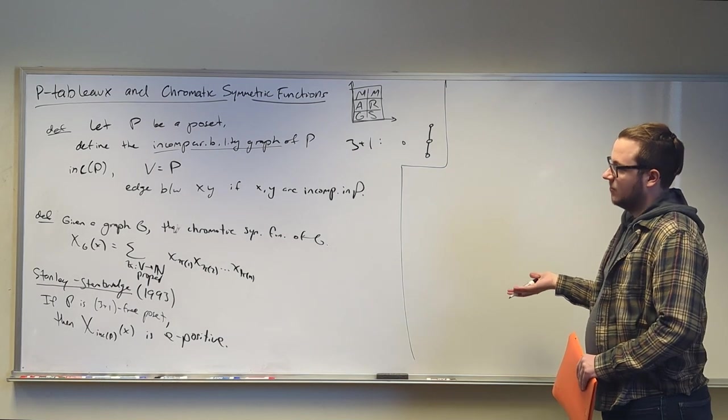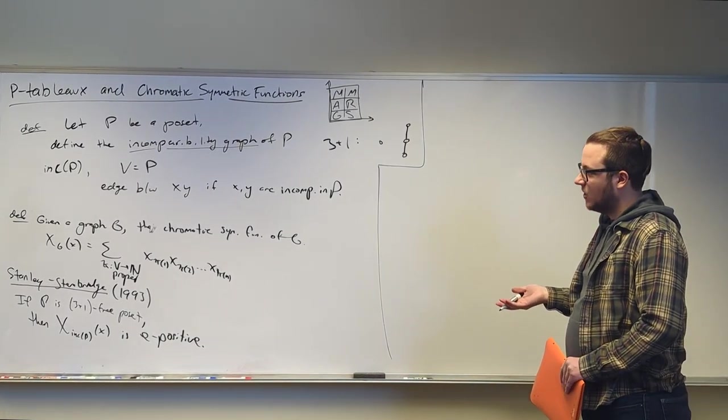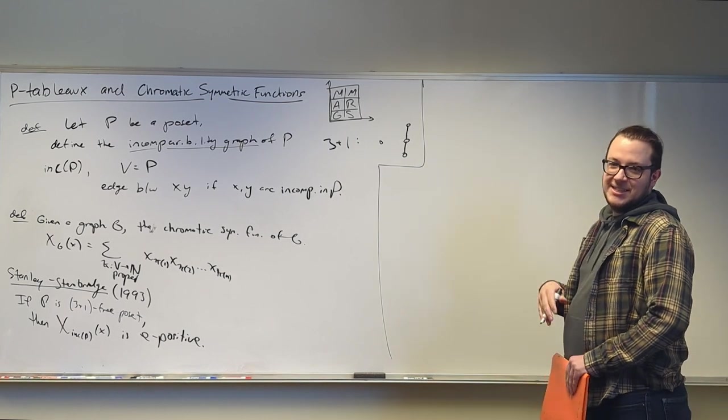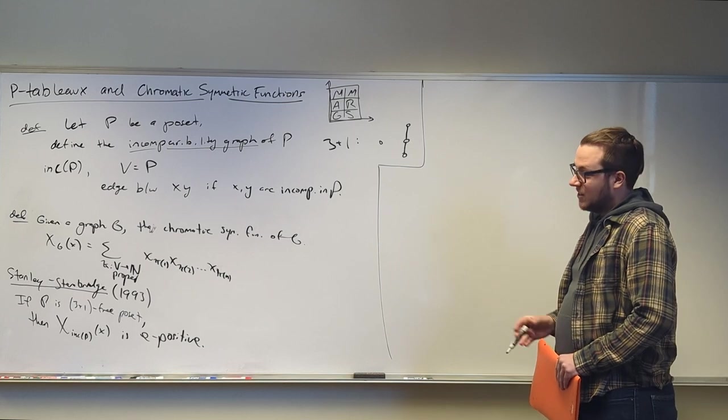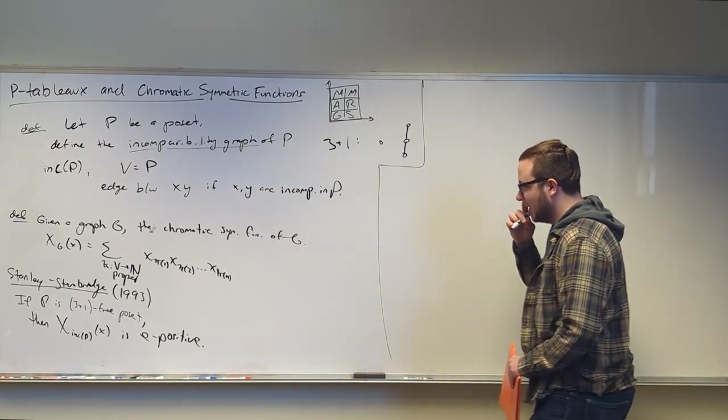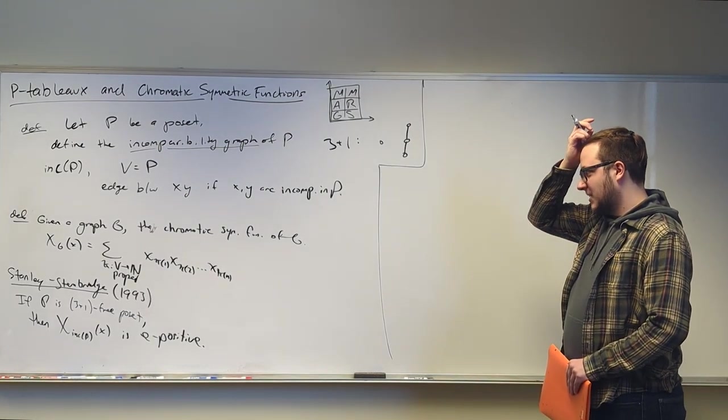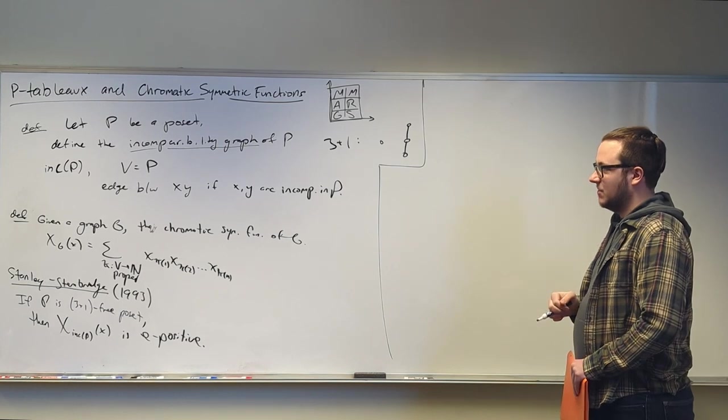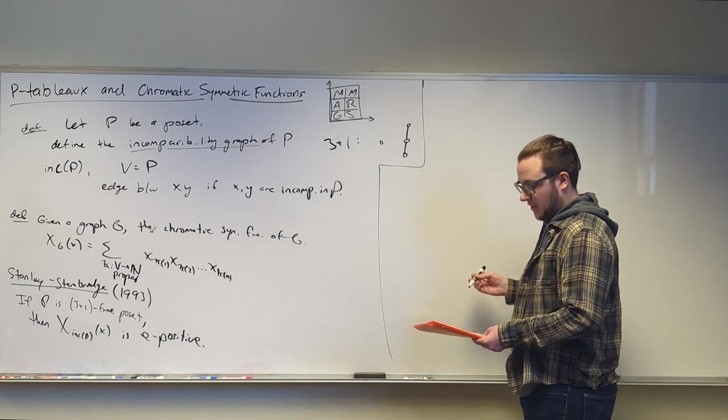So this is, I don't know, middle-aged as far as like mathematical open questions go, you know, there's open questions that date back to the 1800s that we've never solved, and there's open questions that were formulated yesterday. This is like, you know, somewhere in the middle of it. But Richard Stanley, you know, he defined the chromatic symmetric functions, and people were really interested in them right away, and there were some results that came somewhat quickly.